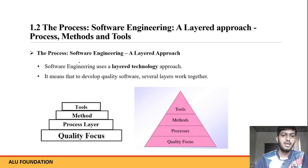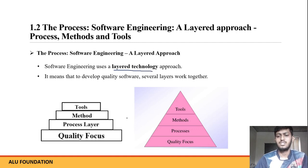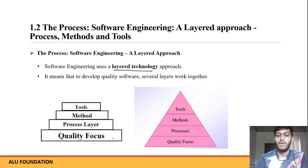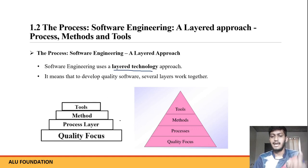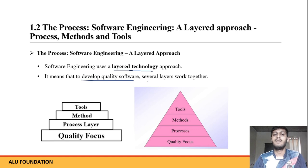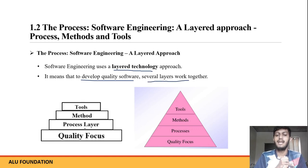So, these four layers work together and are interconnected to each other. This is software development as a layered approach. Software engineering uses a layered technology approach. You can see in the diagram, the layers are: tools, methods, process, and quality focus. Several layers work together to develop quality software.